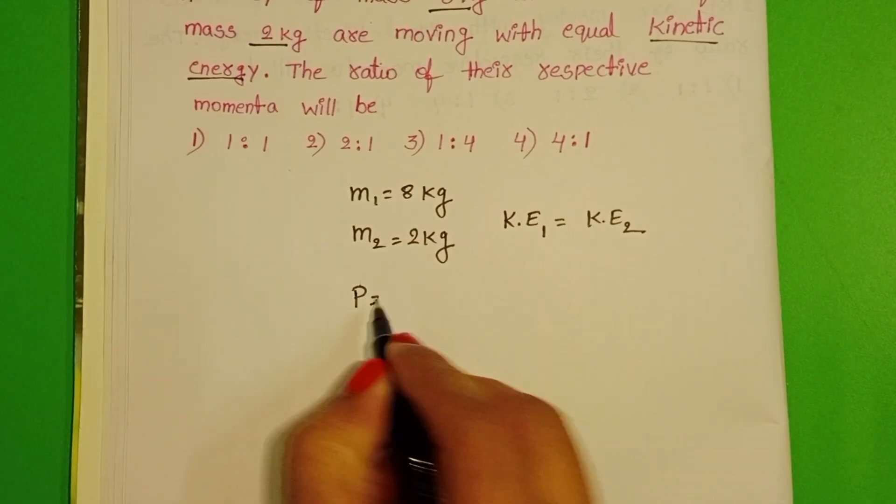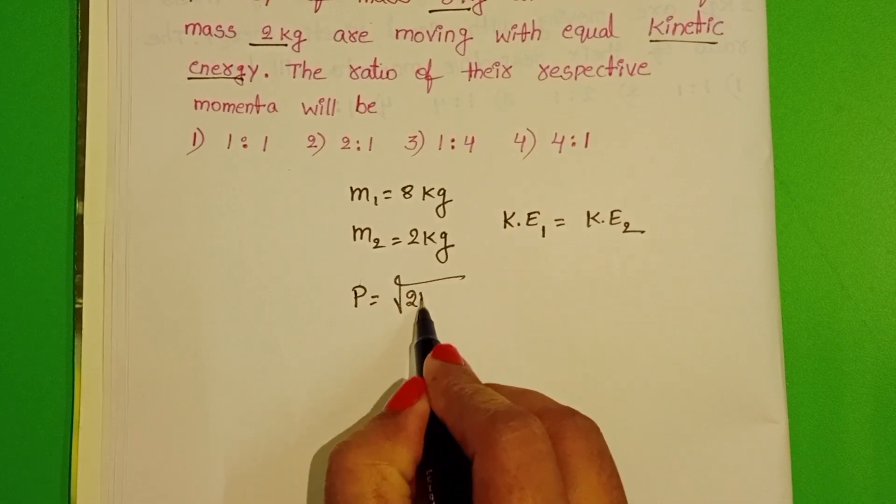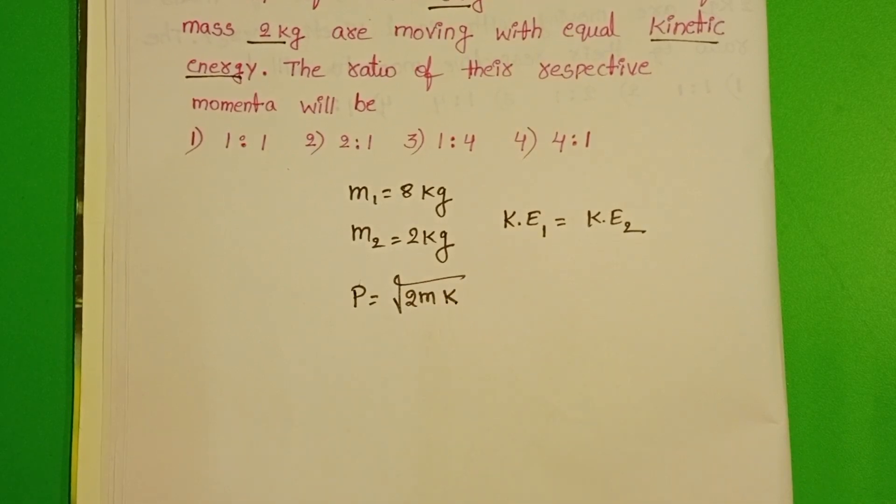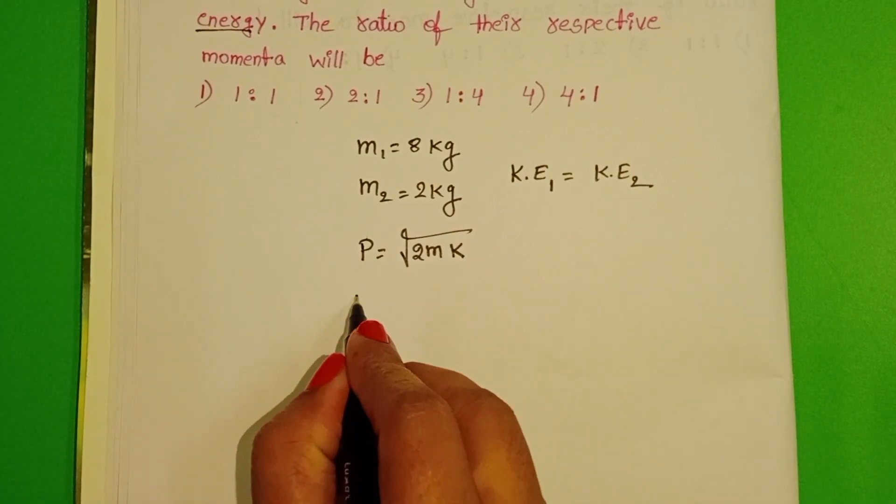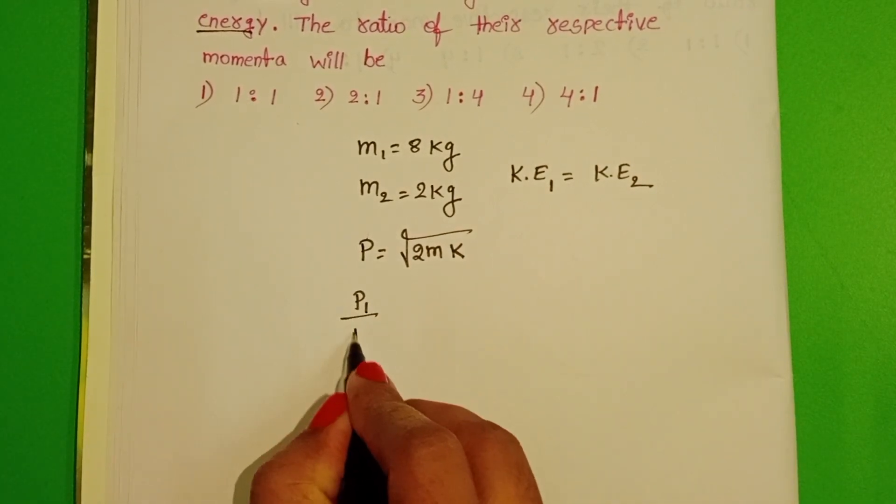Momentum equals square root of 2m times kinetic energy: P = √(2mK). Take the ratio of momenta of the two bodies P₁